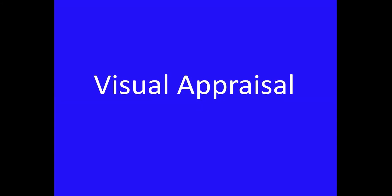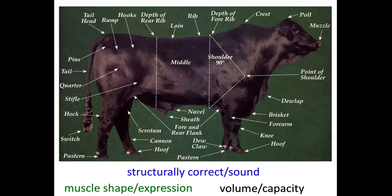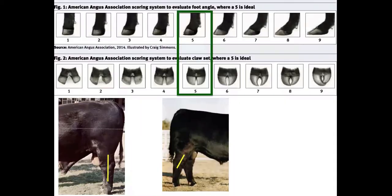Visual appraisal is something that used to get more attention and is starting to pick back up. Some people get so obsessed with EPDs and data that they don't pay enough attention to bulls from a visual appraisal standpoint. We still need to make sure those bulls are structurally sound and correct, that they have some muscle shape and expression — because a lot of times cattle are sold from visual evaluation as well as weight — and that they have some volume and capacity.